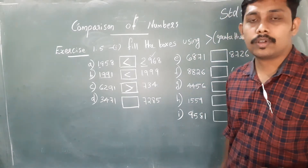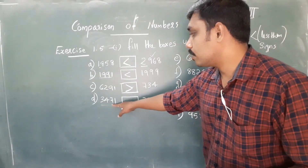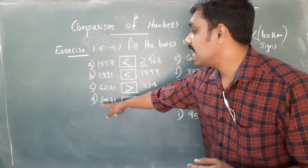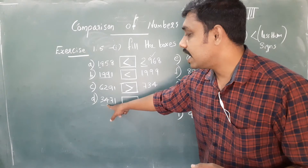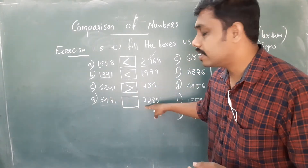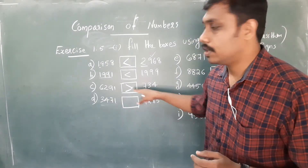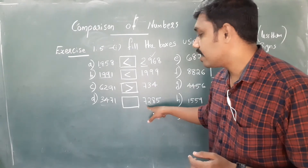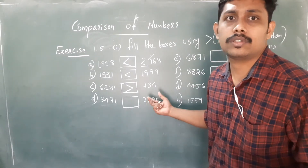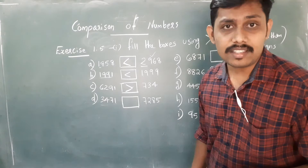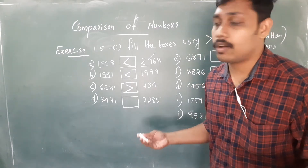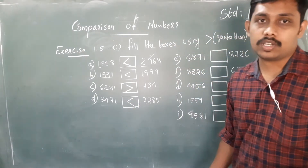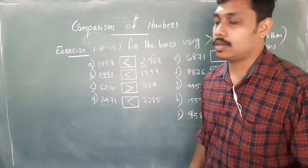Next problem: 3471 is a four-digit number, and the next is also a four-digit number. The left extreme number here is 3, and here is 7. So this second number is larger. We represent it with the open mouth to the larger number.